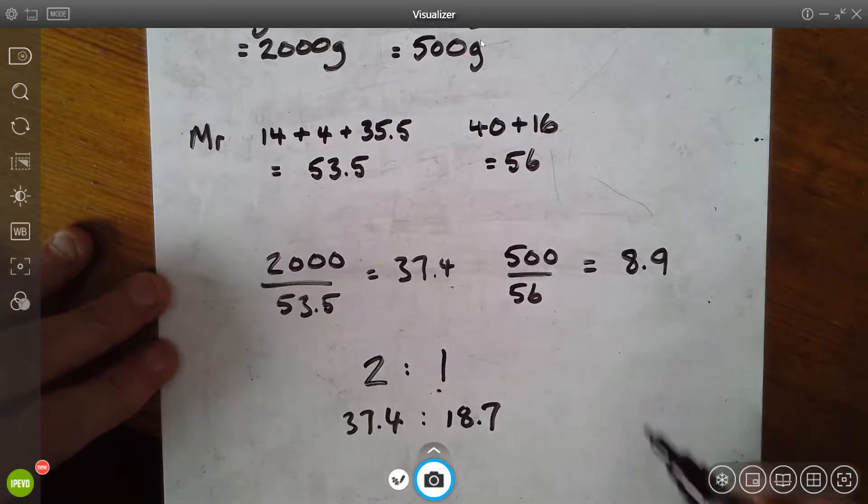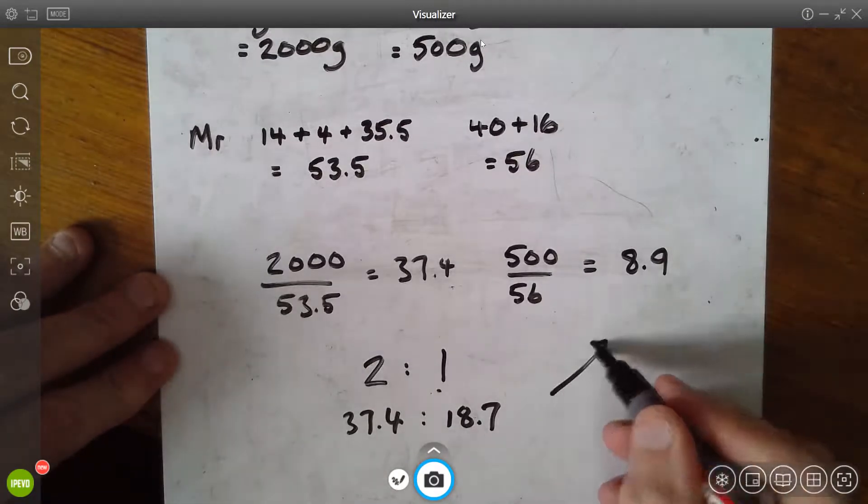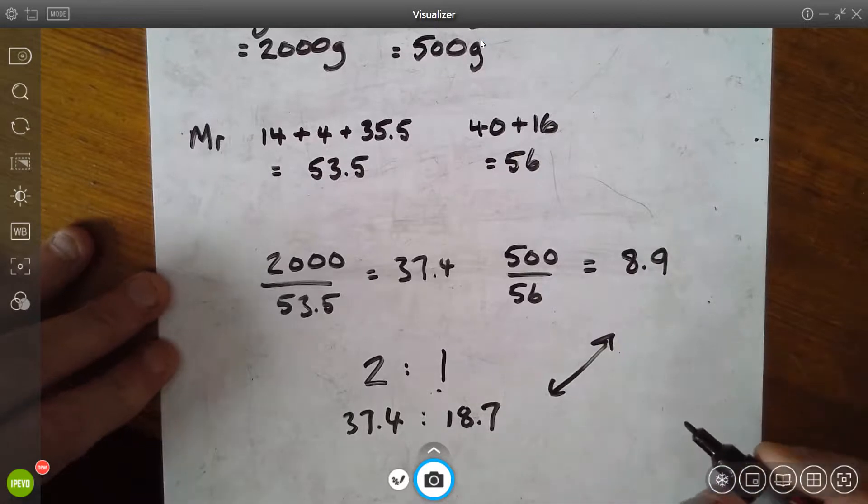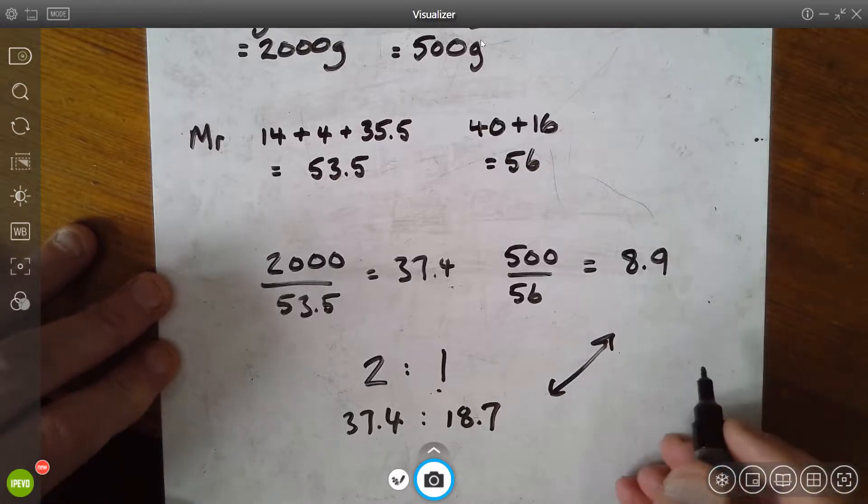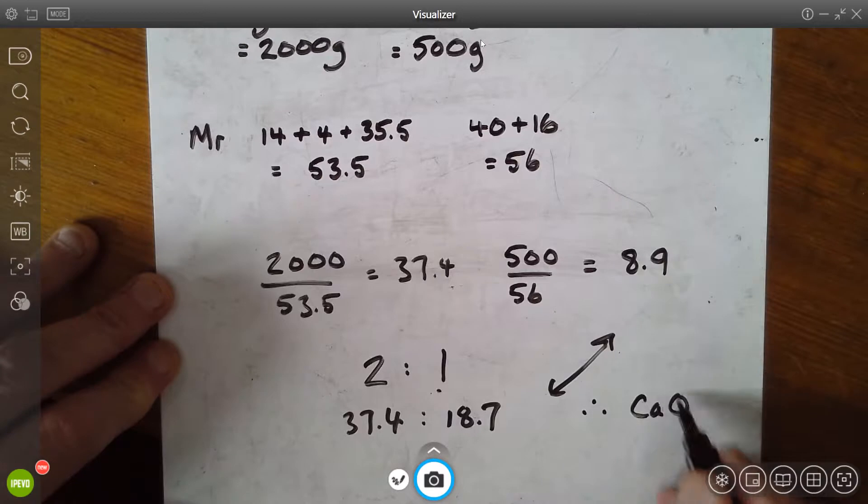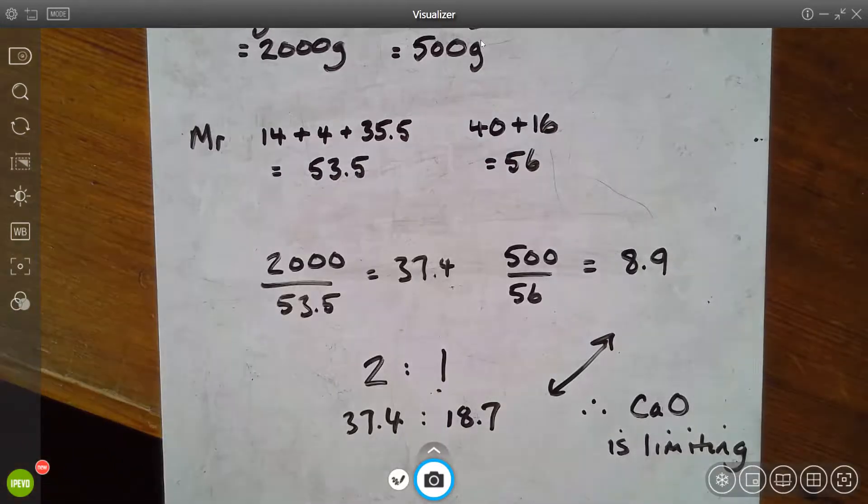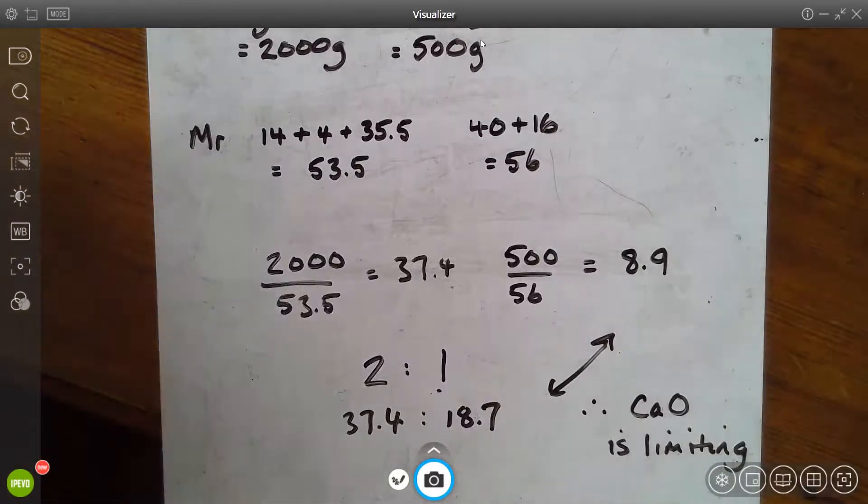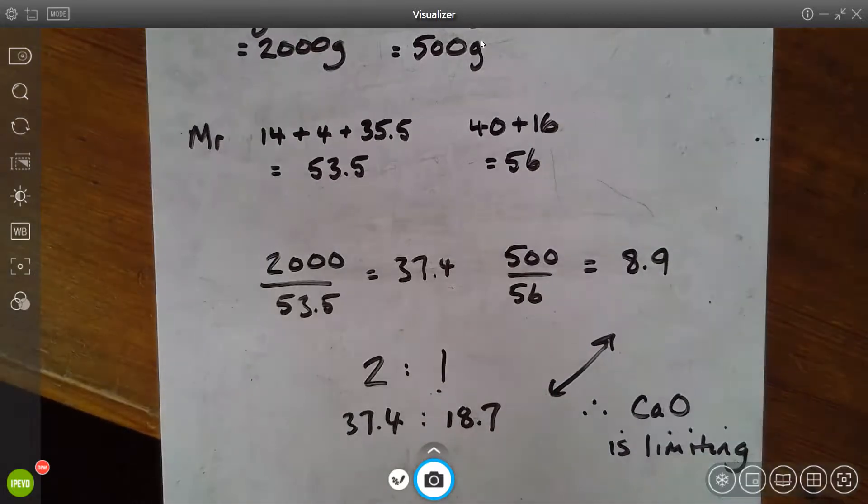So if we had 37.4 moles we would require 18.7 moles of calcium oxide—that's the same ratio. But we note we only have in this situation 8.9 moles, so we would say we have less calcium oxide than we would require for this quantity of ammonium chloride. So therefore the calcium oxide is limiting. This is the limiting reactant. So well done, that's the kind of working out we need. We need to compare the quantity we do have with the quantity we would need. Calcium oxide is limiting.